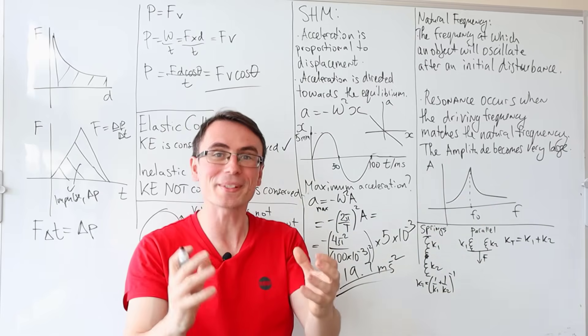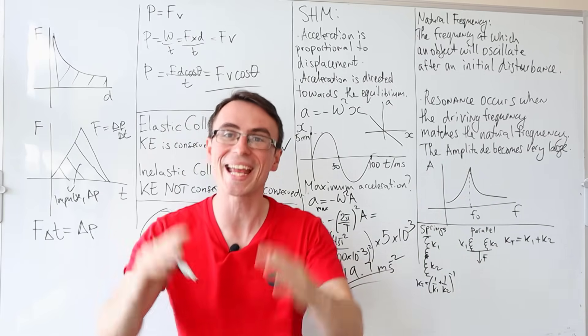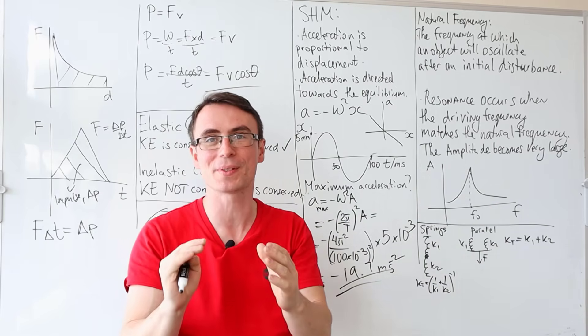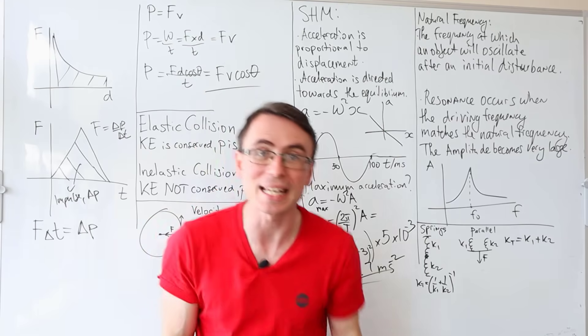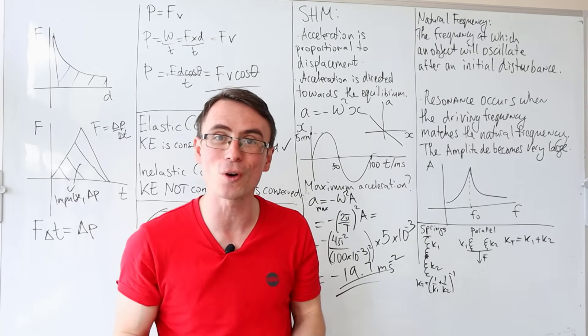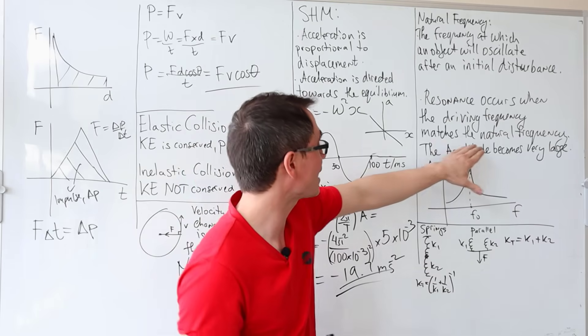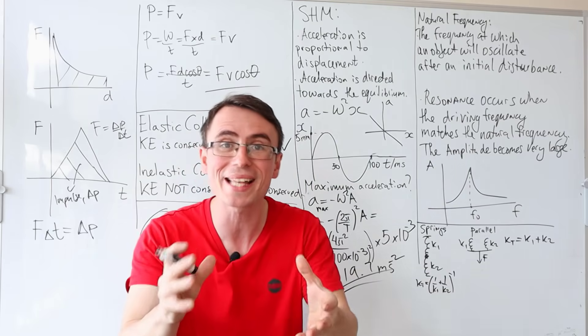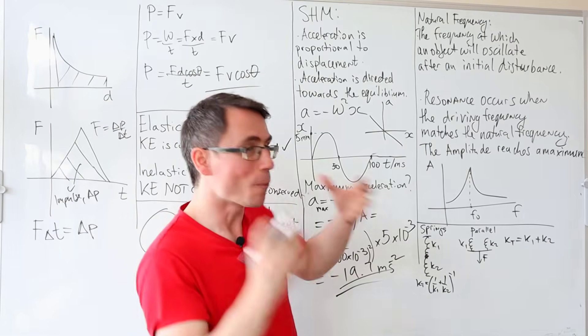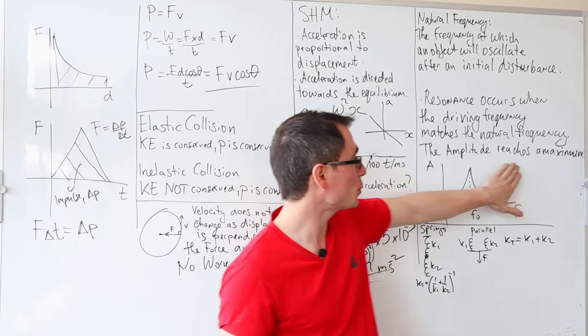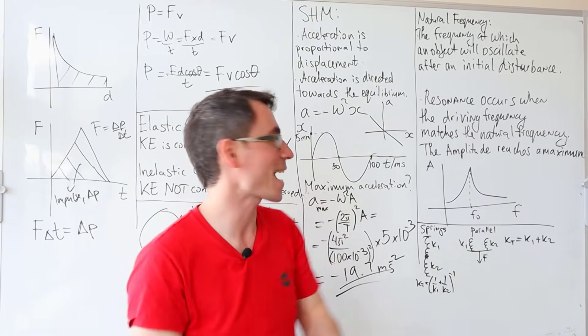The natural frequency is the frequency at which an object will oscillate after an initial disturbance and the force is removed. Now, if we apply a driving force and the frequency of the driving force matches the natural frequency, resonance occurs.